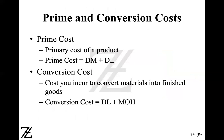Next is prime and conversion cost. Prime cost is the primary cost of the product — the direct costs, which are direct material and direct labor. Conversion cost is the cost incurred to convert direct material into finished goods, which includes direct labor and manufacturing overhead. So conversion cost has both a direct component (direct labor) and an indirect component (manufacturing overhead), whereas prime cost consists entirely of direct components.